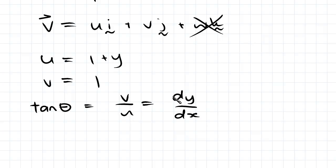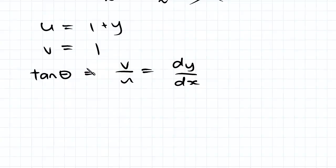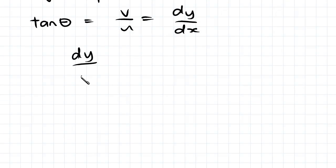be careful with that because it's quite easy to get them the other way around. So plugging in our values for u and v and integrating, we'll have dy over dx equals 1 over 1 plus y. Multiplying both sides by dx and 1 plus y gives us 1 plus y dy equal to dx,